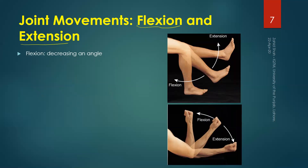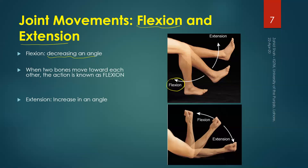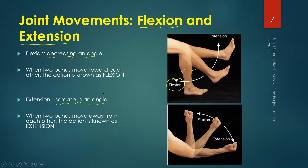Flexion is a decrease of angle between two body parts — when two bones move towards each other, the action is known as flexion. For example, if the lower leg moves towards the upper leg as shown in the figure, that is flexion. Extension is the increase in angle between two body parts — when two bones move away from each other, that is extension.